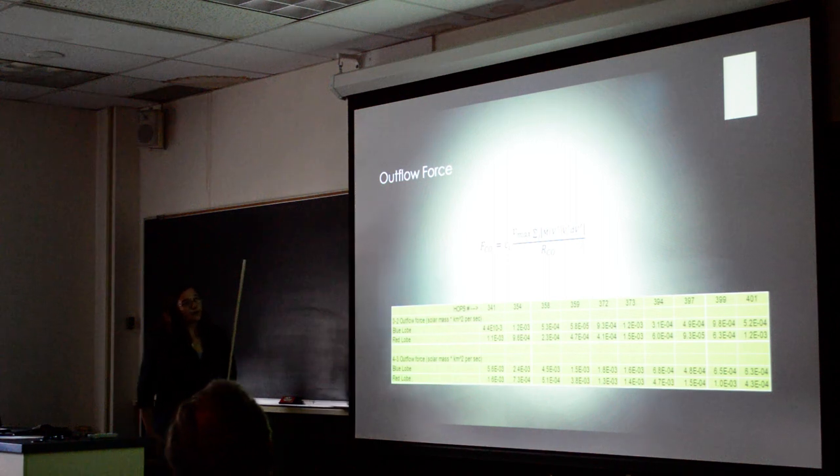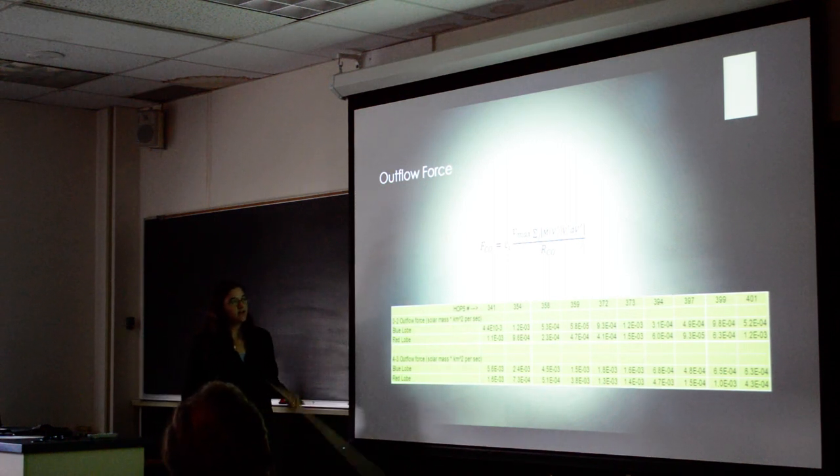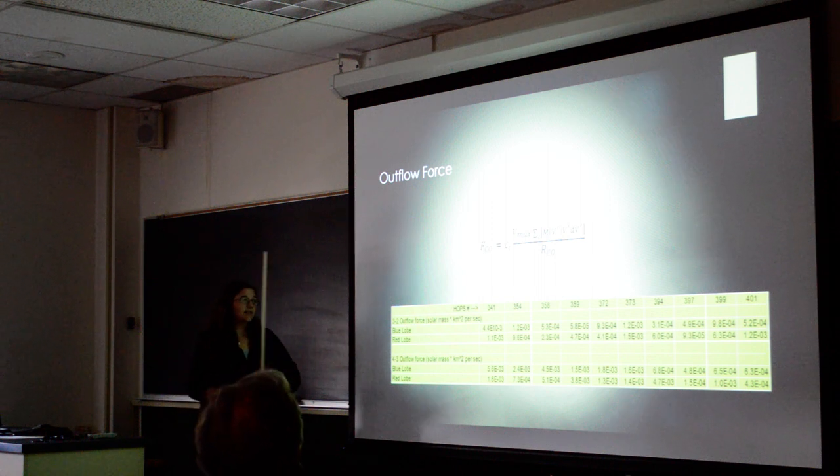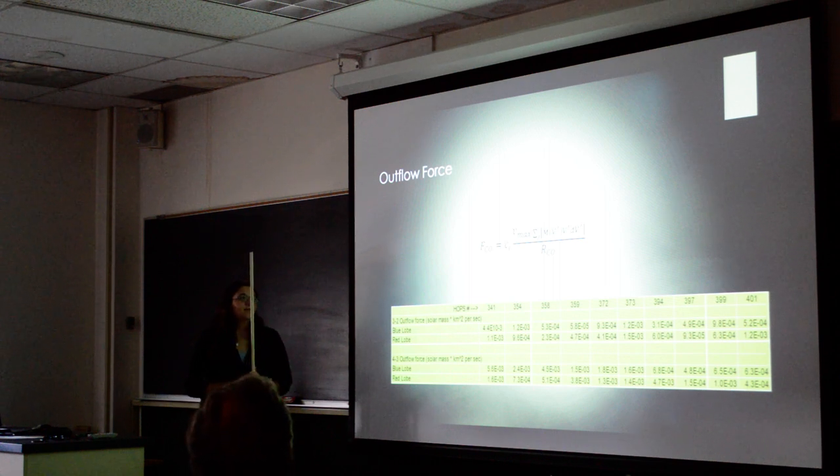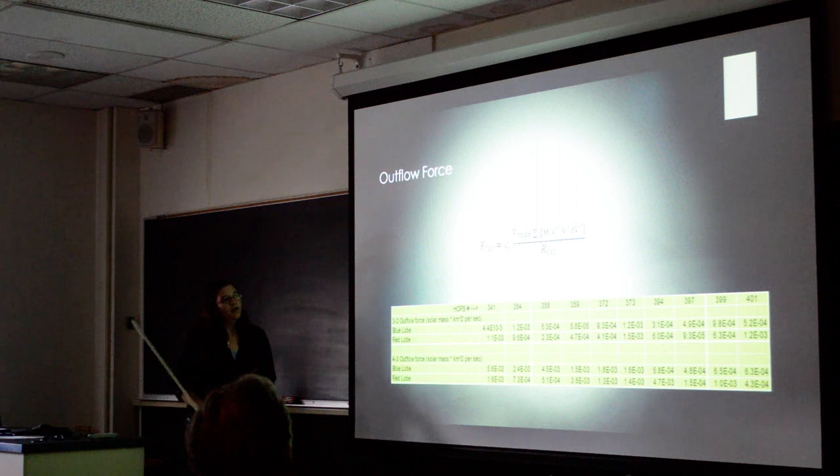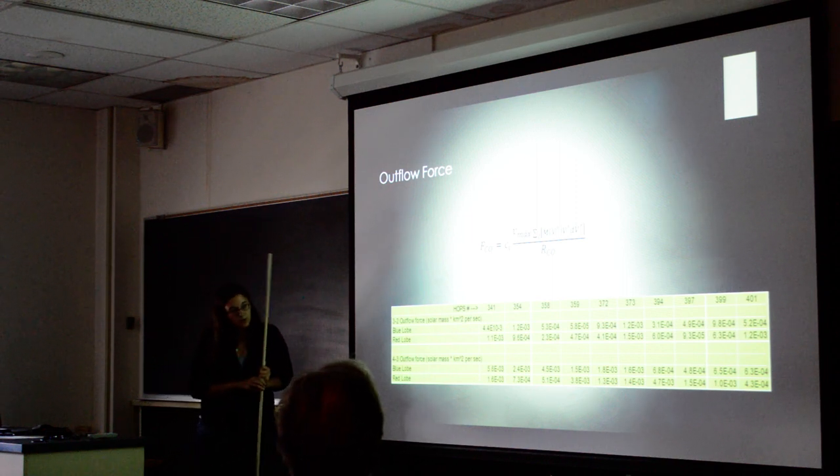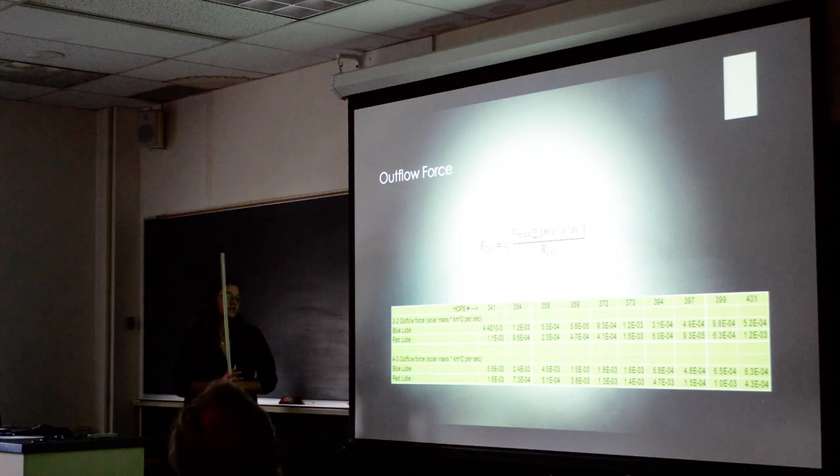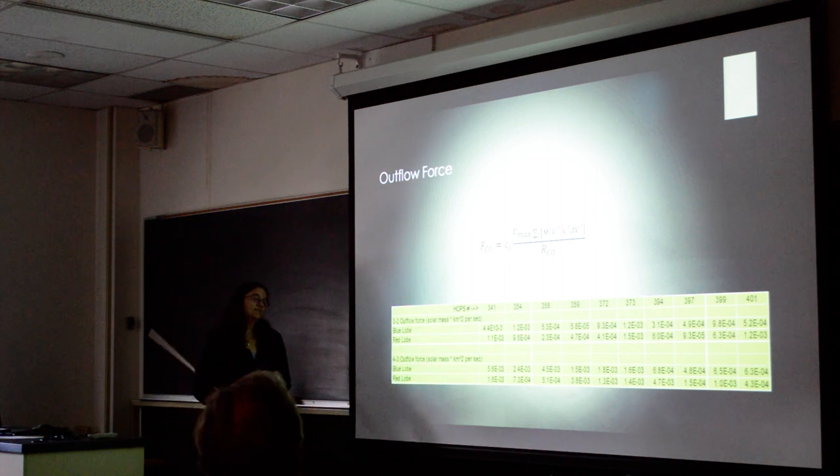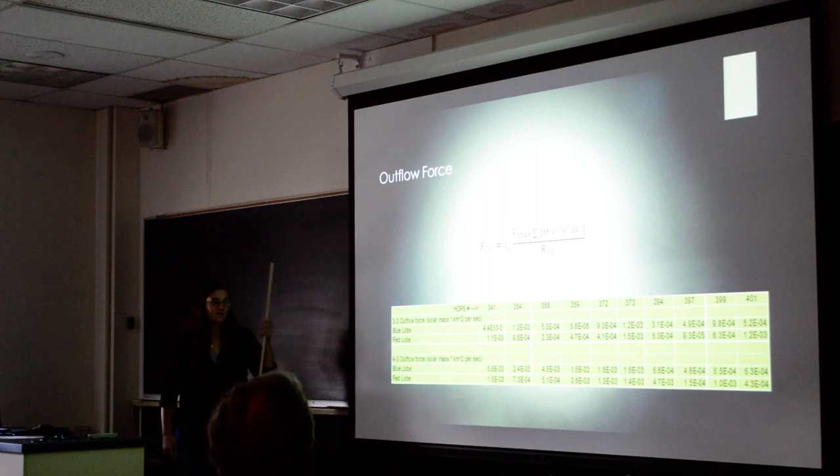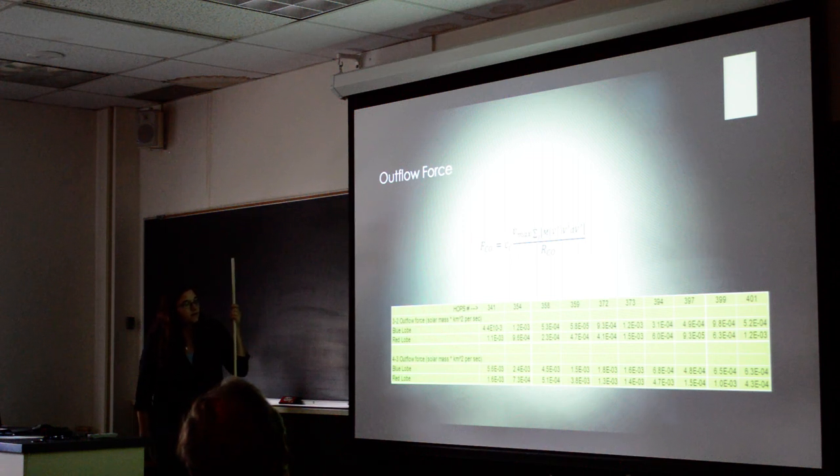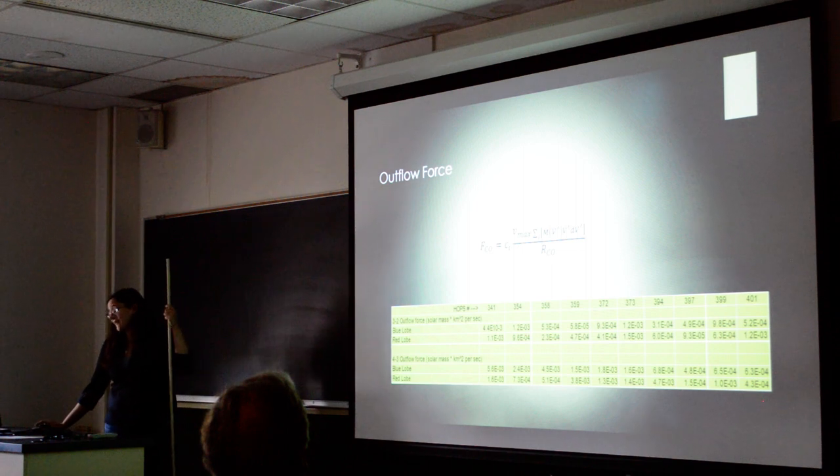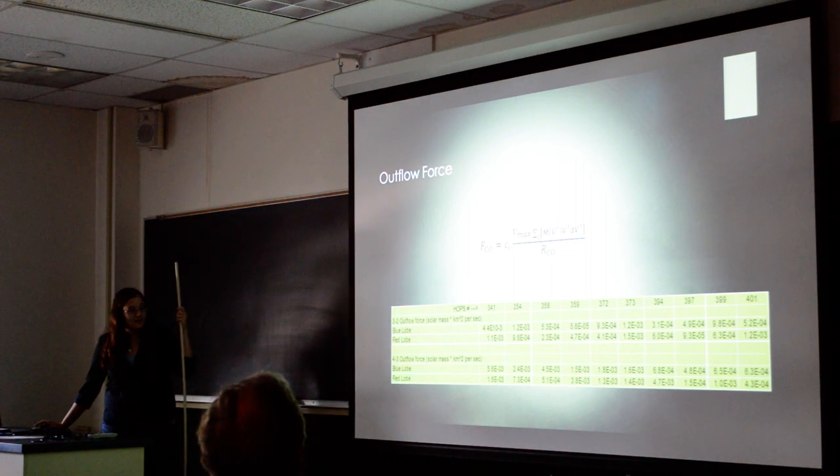And we calculated the outflow force. Ci was the inclination factor. Vmax being the maximum velocity for each that we took, so 25 for most of them. And then it was the sum of, that's actually an integral, of the integrated intensity for each different channel over the size of each. And then we had the raw data for each of the forces. This is actually the wrong units here; it should be solar mass kilometers per second squared, but all of these were around 10 to the negative 4. I still find it interesting that they were all within a factor of 10 of each other.